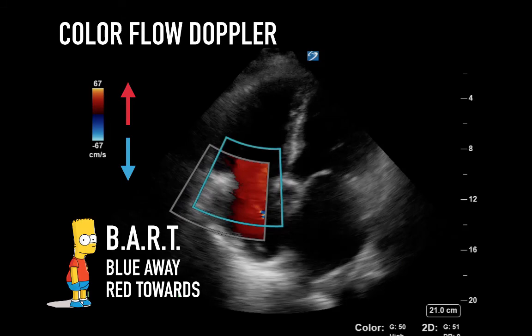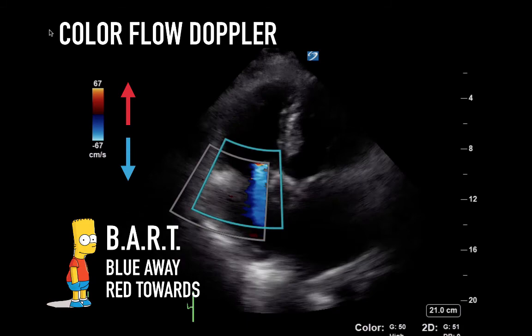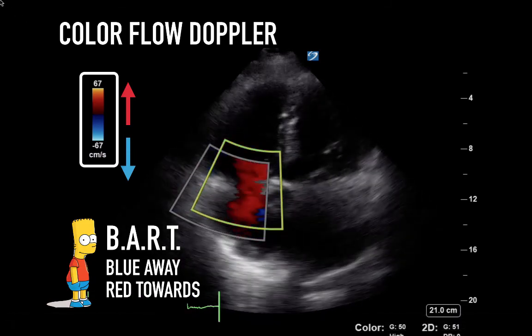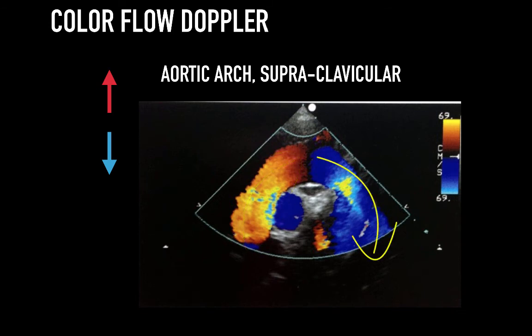BART is the basic acronym: Blue Away, Red Towards. This depends on the position of your color scale. The most obvious example of the BART principle is with the phased array probe placed at the suprasternal notch looking inferiorly. As blood flows towards the probe it's red, and as blood flows away it's blue — much like the ambulance that comes towards you and whizzes away.